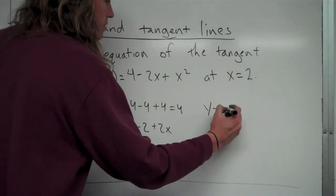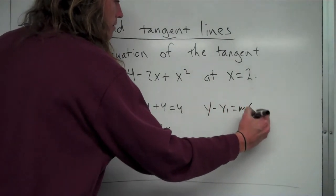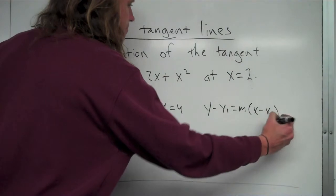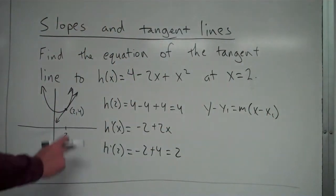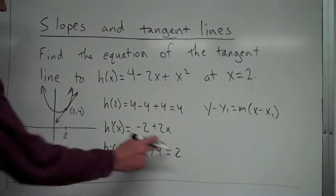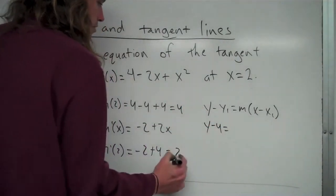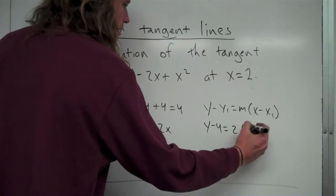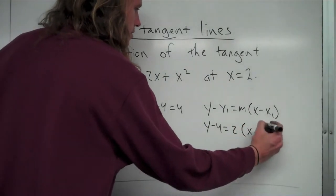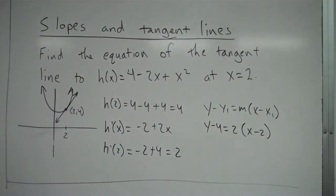So that's just y - y₁ = m(x - x₁). I'm going to go ahead and plug in. So I have my point (2, 4). I have my slope of 2. So I'll plug 4 in for y₁. 2 is going to go in for the slope. And for x₁, it's going to be 2. So there's my equation, my line.